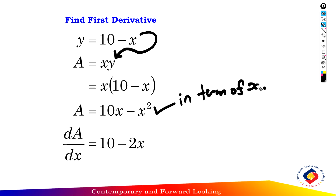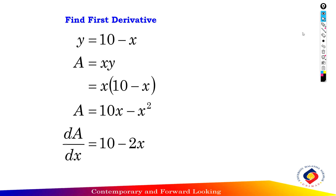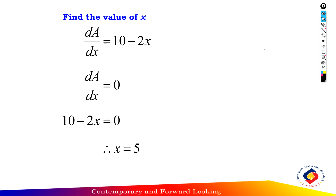Find the first derivative: dA/dx equals 10 minus 2x. Set the first derivative equal to zero: 10 minus 2x equals 0. Solving gives x equals 5 meters.